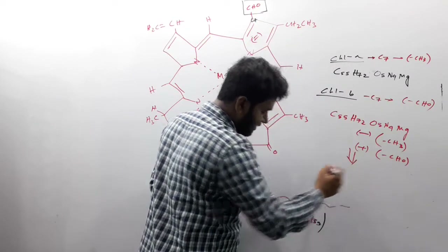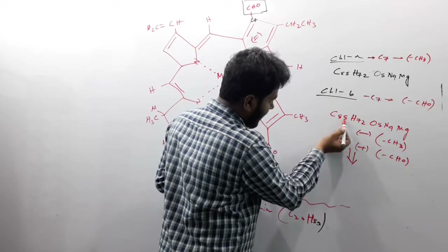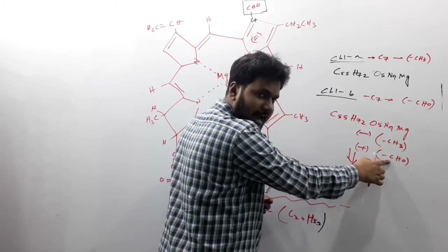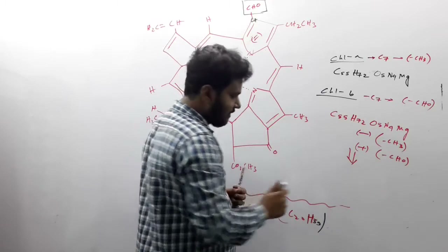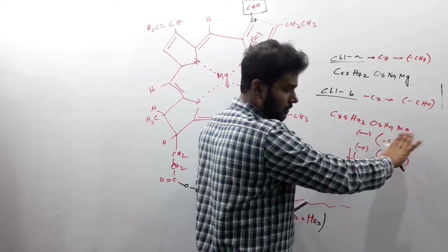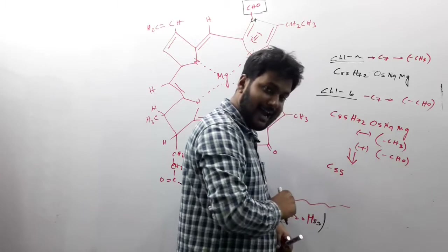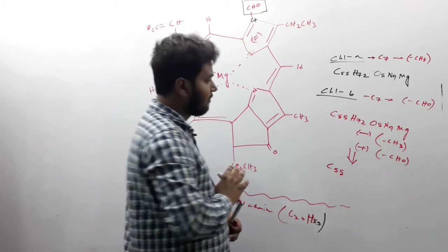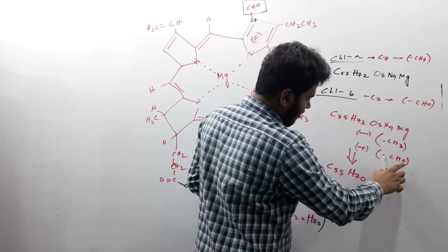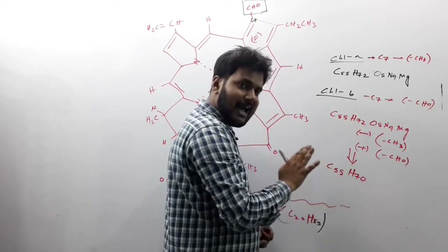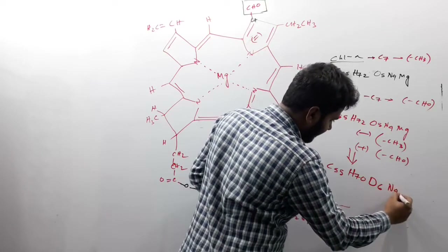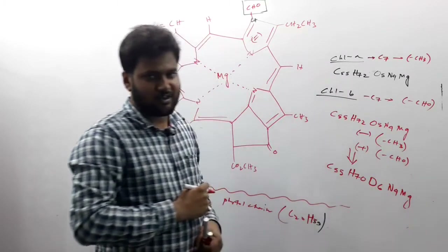The final result: carbon C55 stays the same — one carbon removed and one carbon added. For hydrogen, three hydrogens removed and one added, so two fewer hydrogens: H70. For oxygen, one new oxygen added, so O5 becomes O6. N4 and Mg remain unchanged. This is the chemical formula of chlorophyll B: C55, H70, O6, N4, Mg.